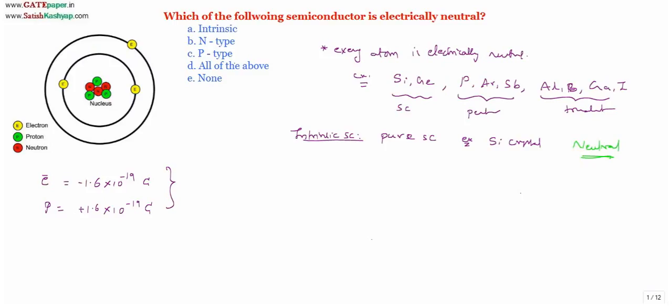A semiconductor that consists of all identical atoms — for example, silicon crystal, germanium crystal, or carbon crystal — is intrinsic. Every atom is electrically neutral, so even if you add an infinite number of atoms, since each has neutral charge, the total is also neutral. Therefore, intrinsic semiconductor is electrically neutral.